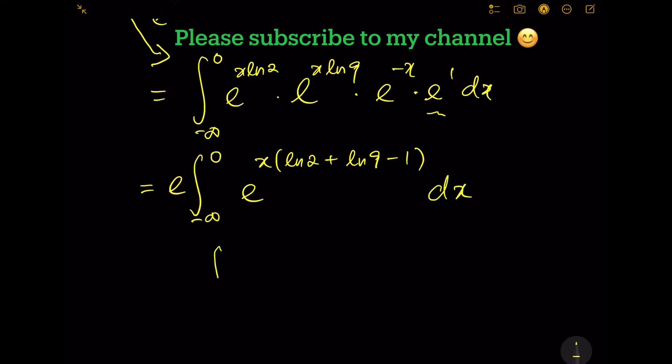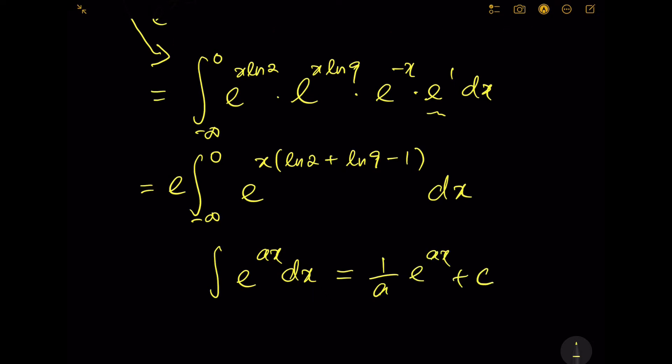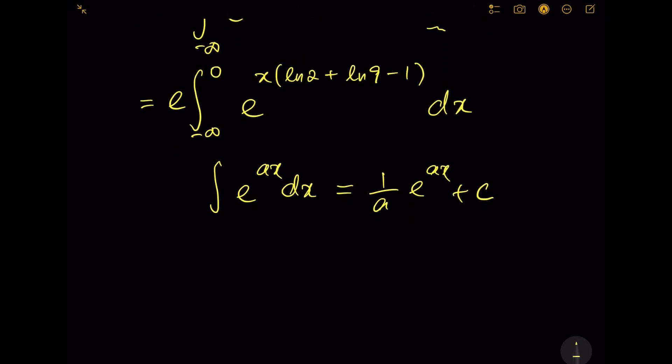Now it's just like integrating e^(ax) dx where a is constant. You get (1/a)e^(ax) + c. So our integral here equals e times e^(x(ln 2 + ln 9 - 1)) over (ln 2 + ln 9 - 1), evaluated from negative infinity to 0.